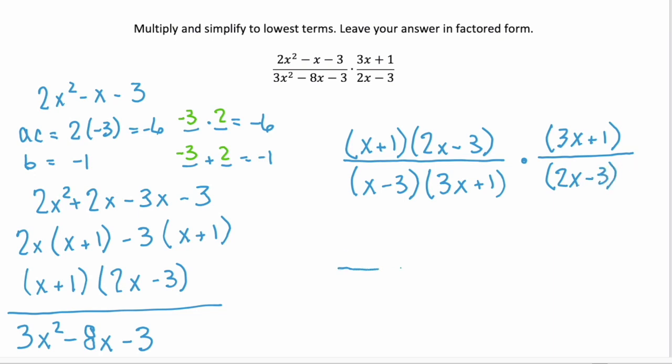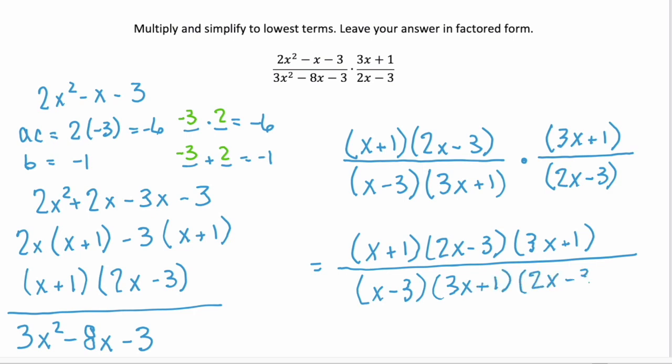Now that everything's factored, we can multiply the numerators and the denominators together. So we have x plus 1 times 2x minus 3 times 3x plus 1. And the denominator, x minus 3 times 3x plus 1 times 2x minus 3.